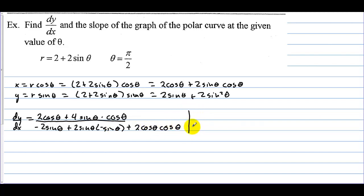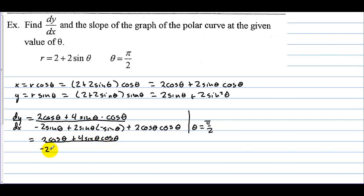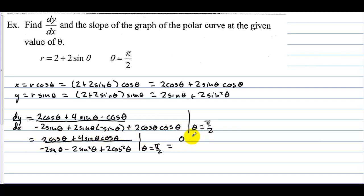We want to evaluate this at theta equals pi over 2, but let's simplify first. The numerator is 2 cosine theta plus 4 sine theta cosine theta. When we evaluate at pi over 2, cosine of pi over 2 is 0, so the top is going to be 0.